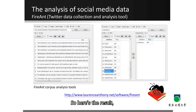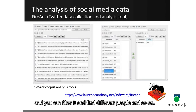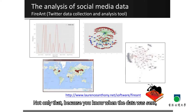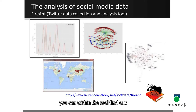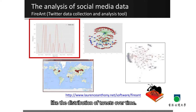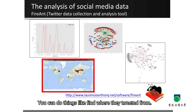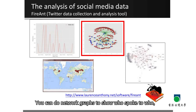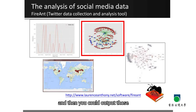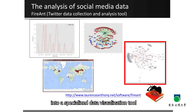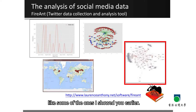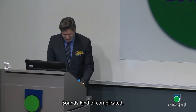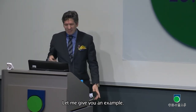Here's the result. You can take that and filter it and find different people. Not only that — because you know when the data was sent, you can find out the distribution of tweets over time. You can find where they tweeted from. You can do network graphs to show who spoke to whom, and then output those into a specialized data visualization tool that will produce some beautiful graphs like some of the ones I showed you earlier. It sounds kind of complicated, but it's actually surprisingly easy.